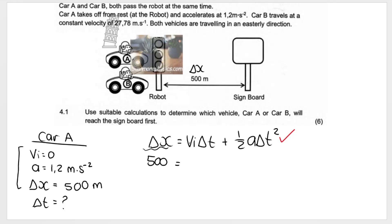So we know that the distance is 500 meters. We know the initial velocity is zero. We are looking for time. We know that acceleration is 1.2, and we are looking for time.